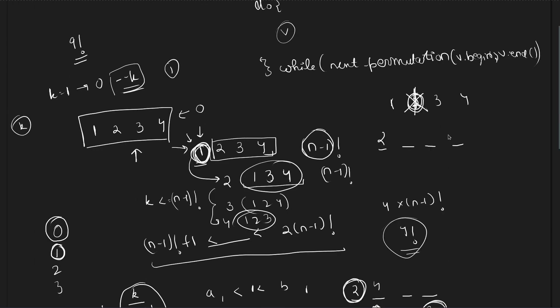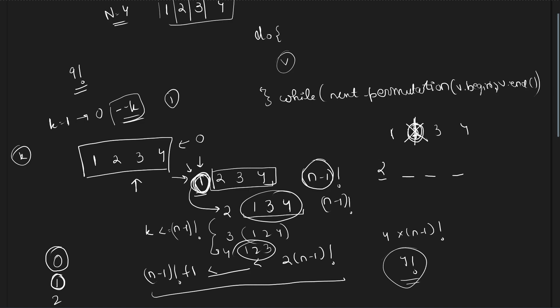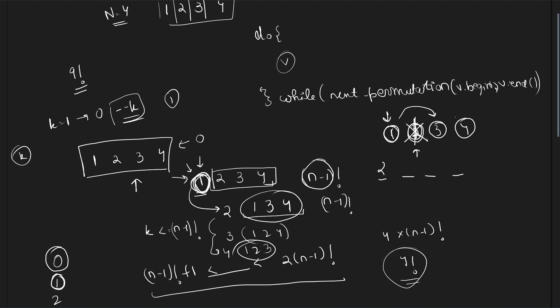The key thing to take care of is: for example, we placed 2 at the first position. Now the first candidate for the second position is 1, the second candidate is 3, and the third candidate is 4. If I want to shift up 0 times I take 1; shift up 1 time I take 3; shift up 2 times I take 4. This is how we select numbers at each position using the remaining available candidates.